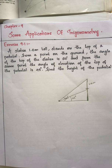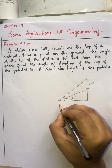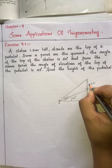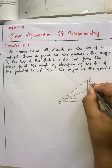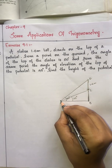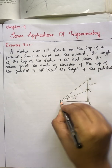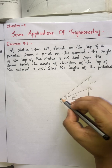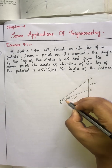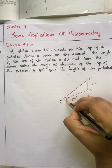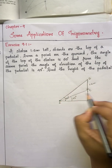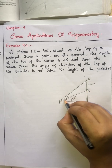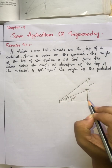This is a triangle. We label the points A, B, C, and D. From this point, you can see the top of the statue at an elevation of 60 degrees, and from the same point, you can see the top of the pedestal at an elevation of 45 degrees.